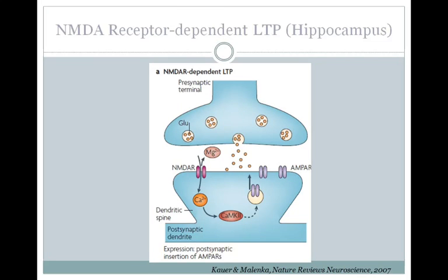Another way to look at this NMDA receptor-dependent LTP: glutamate is released from the presynaptic neuron, which can open both AMPA receptor channels and NMDA receptor channels as long as the magnesium block is removed by membrane depolarization. Once the NMDA receptor is open, calcium can enter the cell and bind to CaM kinase 2, starting a signaling cascade that, among other things, can increase the trafficking of the AMPA receptor to the membrane. The signaling cascade can also lead to increased phosphorylation of either the AMPA or NMDA receptors, increasing their probability of opening. Each of these things will increase the amplitude of subsequent EPSPs.